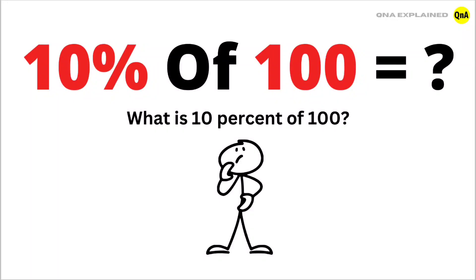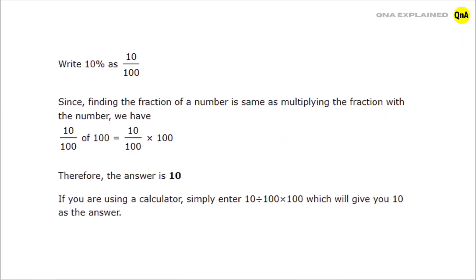What is 10% of 100? Write 10% as 10/100. Since finding the fraction of a number is the same as multiplying the fraction with the number, we have 10/100 of 100 equals 10/100 × 100.